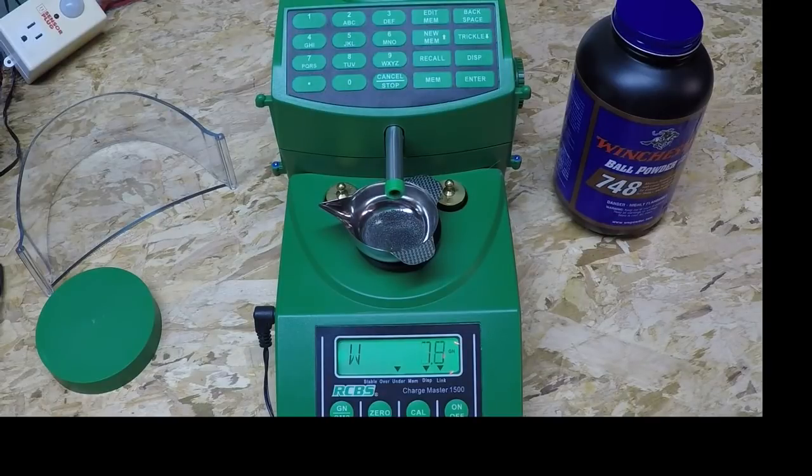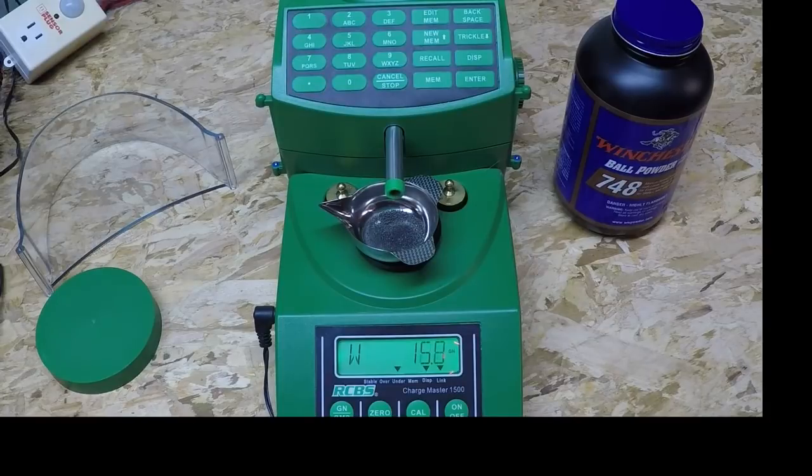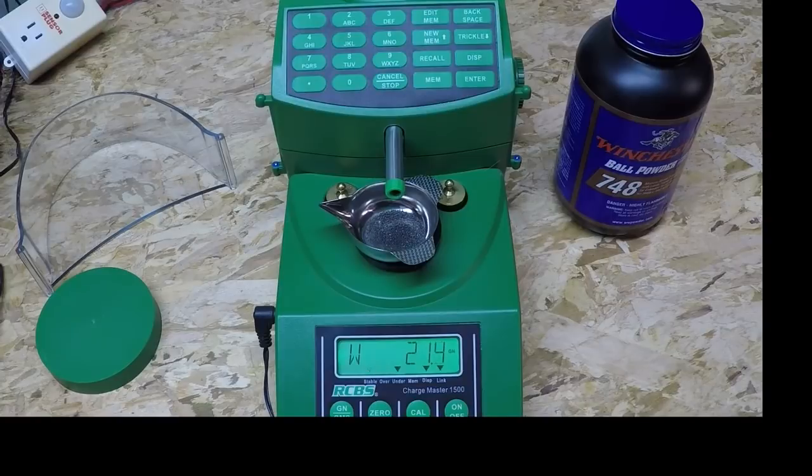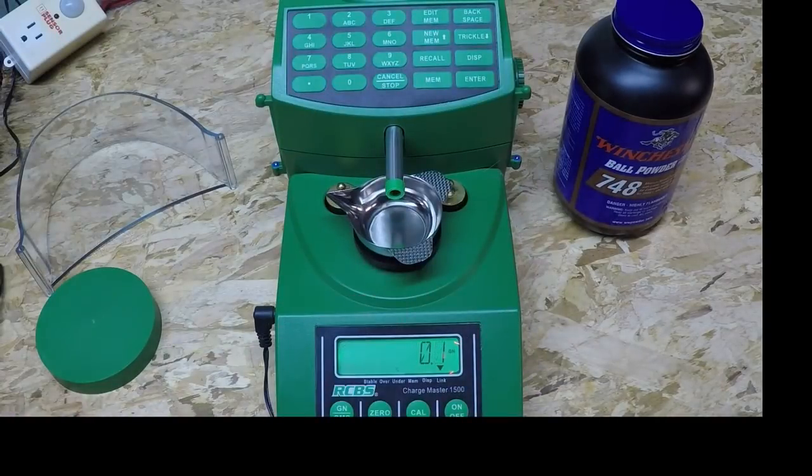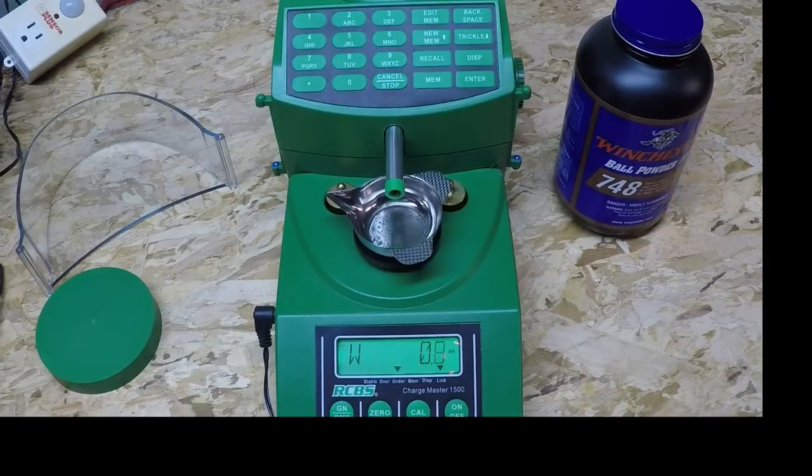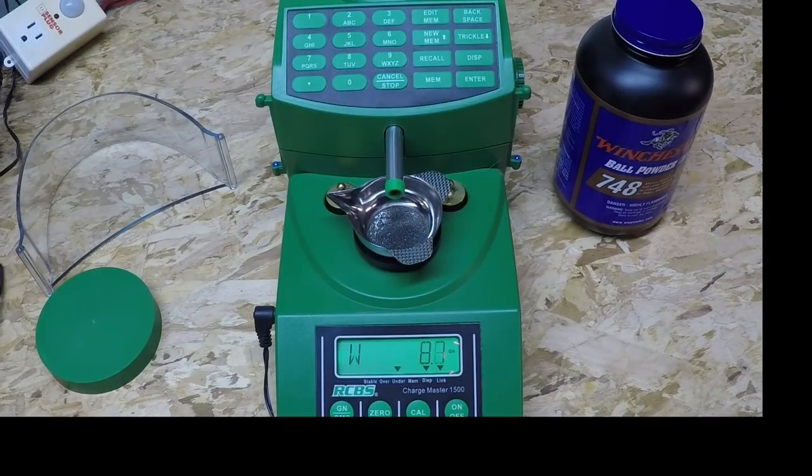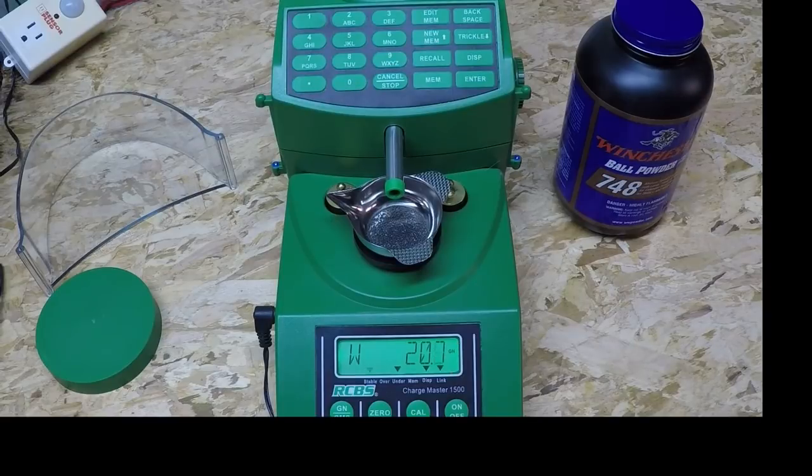Again, right now the software is measuring the flow rate per unit time. Again, that affects how quickly it trickles because it doesn't want to overcharge. And then again, 21.6. Let's try it again. The software is pretty intelligent here. That scale is lagging the actual weight because it takes time for it to settle.